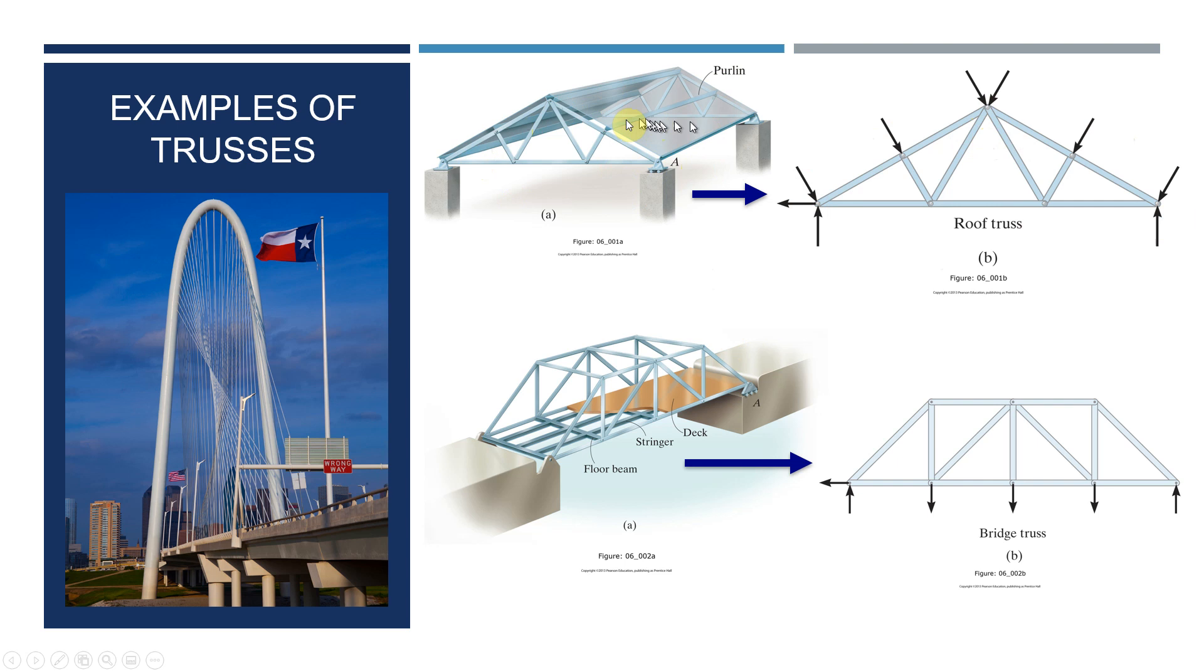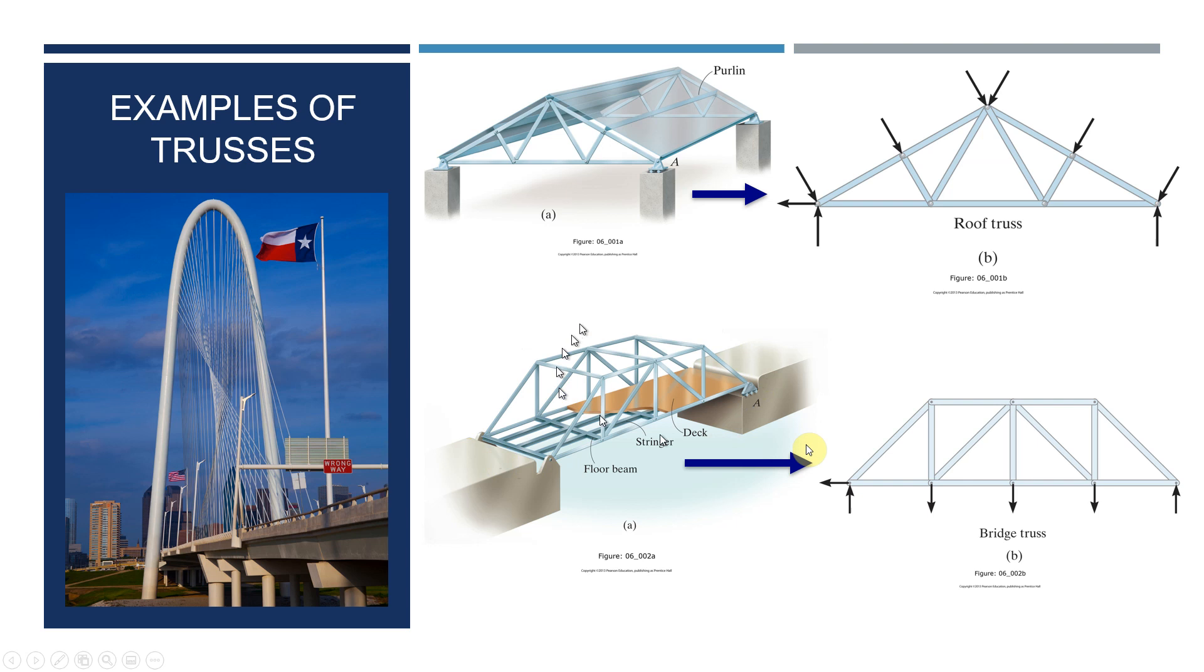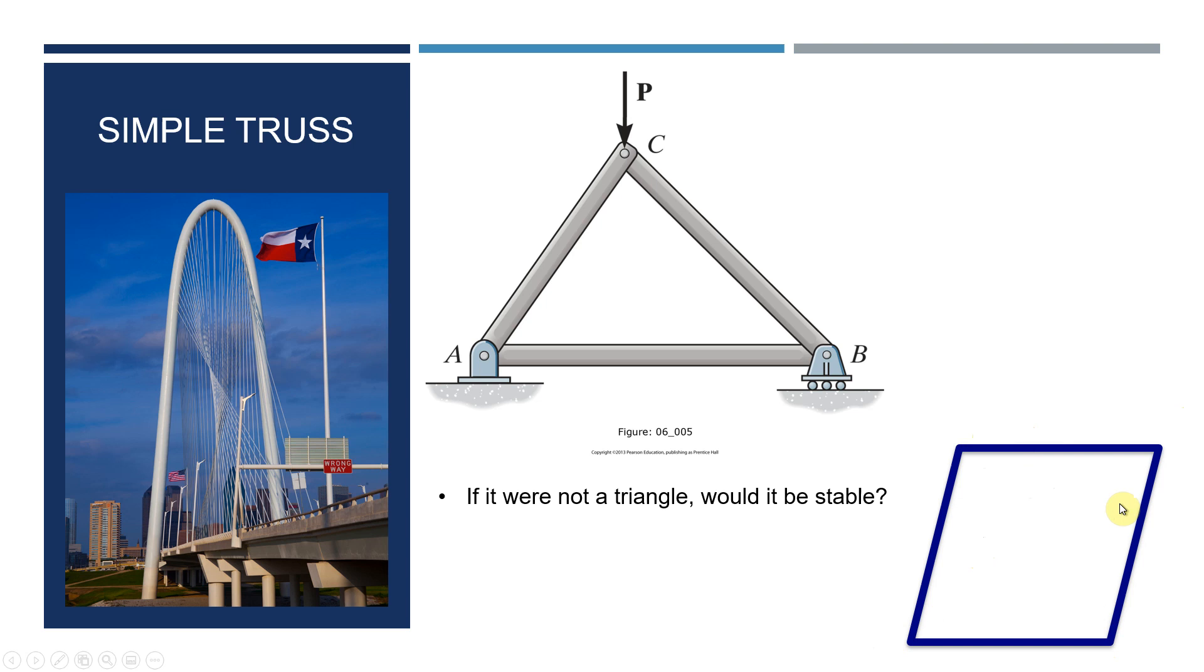Would it be stable if it were not a triangle? And the answer is no. Everybody knows that this is a stable configuration. This will tend to shear, it'll go sideways. So let's look at a real problem now.